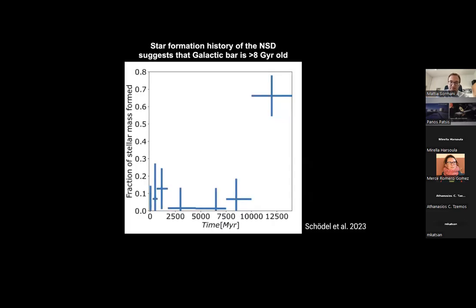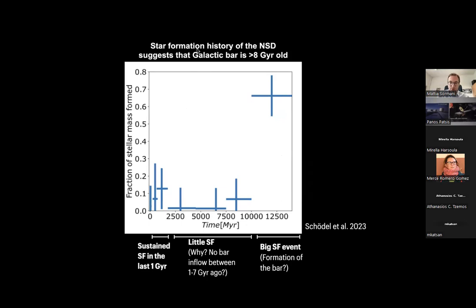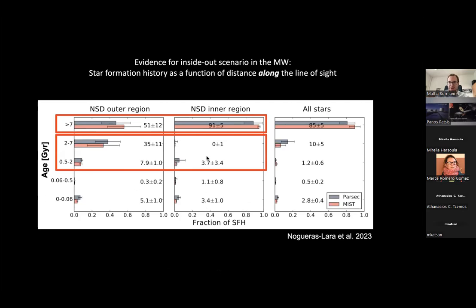Observations show a big star formation event — possibly bar formation — around 8–10 gigayears ago, then a period of very little star formation (puzzling), then sustained star formation in the last gigayear. One possible solution is the inside-out formation scenario: evidence for inside-out formation in the Milky Way comes from Nogueras-Lara, who found all stars in the inner nuclear disk are older than seven gigayears, while the outer parts contain many stars formed between two and seven gigayears ago — the same trend as in external galaxies like NGC 1097.